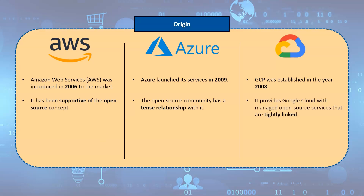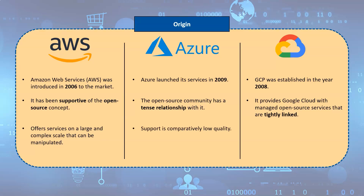GCP, similar to AWS, provides Google Cloud with managed open source services that are tightly linked. AWS offers services on a large and complex scale that can be manipulated, but Azure's support is comparatively lower quality, whereas GCP's monthly support price is almost $150 for the silver class, which is the most basic of services and is quite expensive.